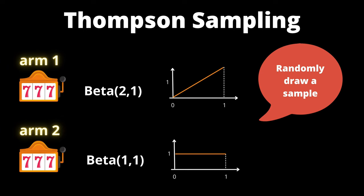Although compared to arm 2, arm 1 has a higher chance to draw a larger number. Because we are sampling the numbers randomly, arm 2 still has a chance to draw a higher number.